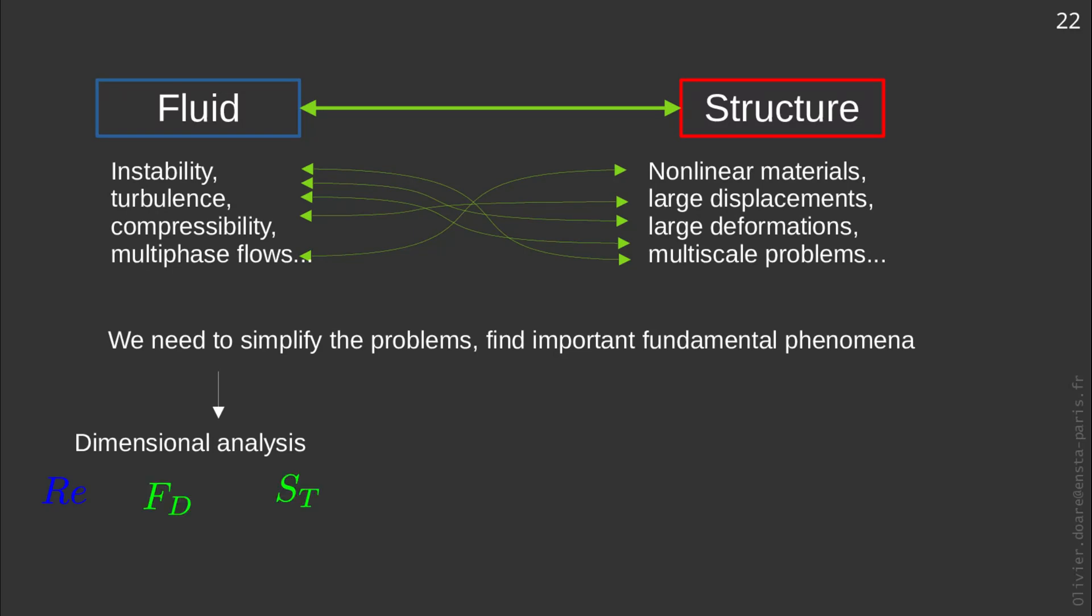At the heart of this simplification approach will be the dimensional analysis. We will introduce dimensionless parameters that will allow us to identify the dominant terms in the equations. These may differ according to the problems encountered. Another simplification approach will consist in linearizing the equations of fluid and solid mechanics. This will allow us to use a modal approach which is very useful and powerful provided that the conditions are met for the linearization to be relevant. Once again, we will justify the relevance of the linearization by dimensional analysis.